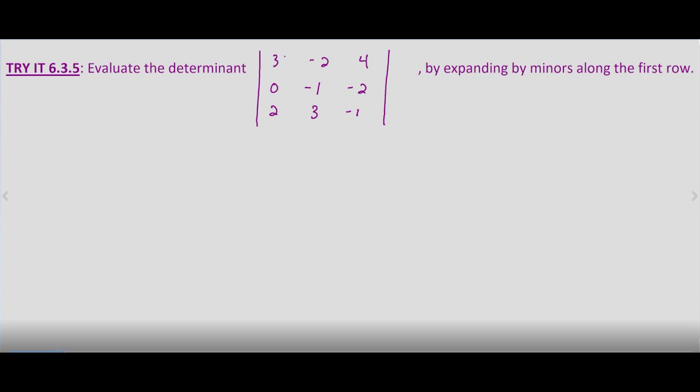And it's using the signs plus, minus, plus. And you'll see later on that when we expand by different rows, by minors of different rows, there's a different sign for each term in each row. But when we're doing it by the first row, it's plus, minus, plus.